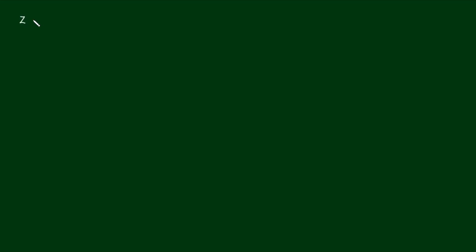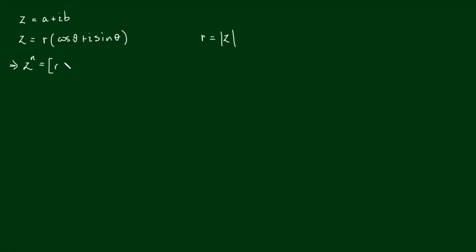We already know that a complex number z equals a plus ib can be expressed in polar form as z equals r times (cosθ + i sinθ), with r being the magnitude of z. If I raise z to the nth power, I get r times (cosθ + i sinθ) all raised to the nth power. Applying the index law, I get r to the power of n times (cosθ + i sinθ) to the power of n.